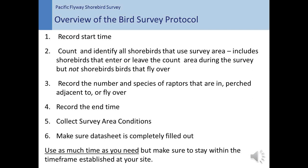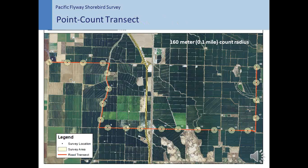Next, let's review each survey protocol in more detail. There are three main types of surveys. The first is the point count transect. These surveys are generally conducted along public roads and agricultural areas. Each point count transect consists of a series of circular areas where surveys are conducted from predetermined locations. Generally, point count transects are 10 miles long, with survey locations located approximately every half a mile, for a total of 20 survey locations per transect. However, some transects may be less than 10 miles and have fewer than 20 locations. Please refer to your specific road transect map and accompanying narrative for information about your route. At each survey location, observers count all shorebirds and raptors within a 0.1 mile or 160 meter radius and record survey area conditions.